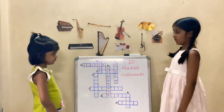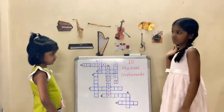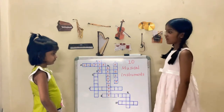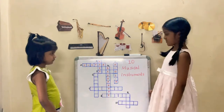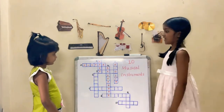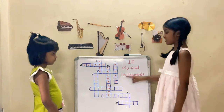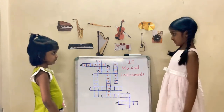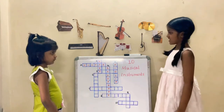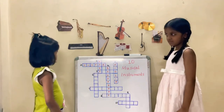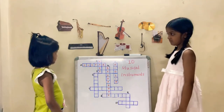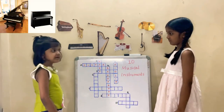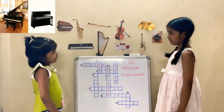Here is a clue for the fifth musical instrument. The starting letter of the instrument is P and the ending letter is O. It is a keyboard instrument. Can you guess the name of the instrument? Yes, the instrument is piano.